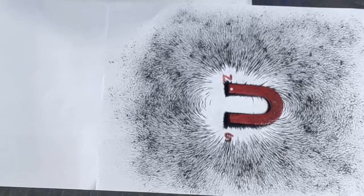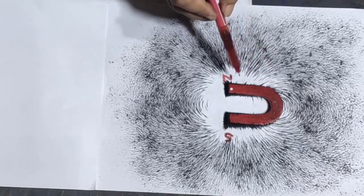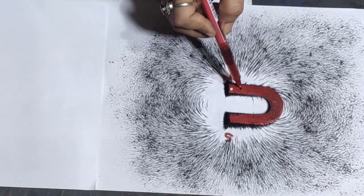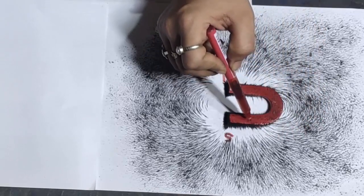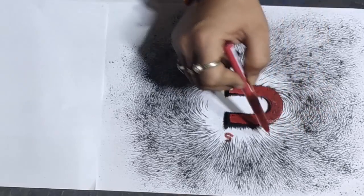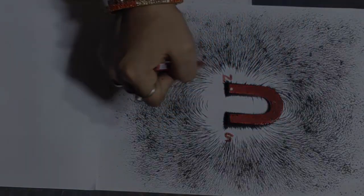This is the final pattern around the horseshoe magnet. So see, this is North Pole and this is South Pole and these are the lines of force coming from North to South, this is the North to South lines of force.